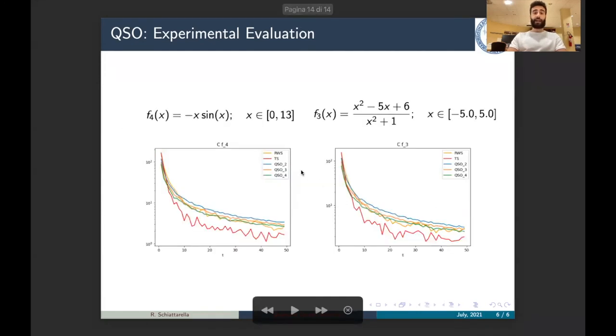As the number of generations of the algorithm T increases, as you can see from the final chart of this presentation, in which we reported the two tests carried out with the two benchmark functions here reported. And these results have been averaged on 20 executions of the algorithms. The C value for the genetic algorithms equipped with the different configurations of QSO are in general higher than the C value for genetic algorithms equipped with roulette wheel selection or tournament selection. I have concluded with my presentation. I thank you for your attention.